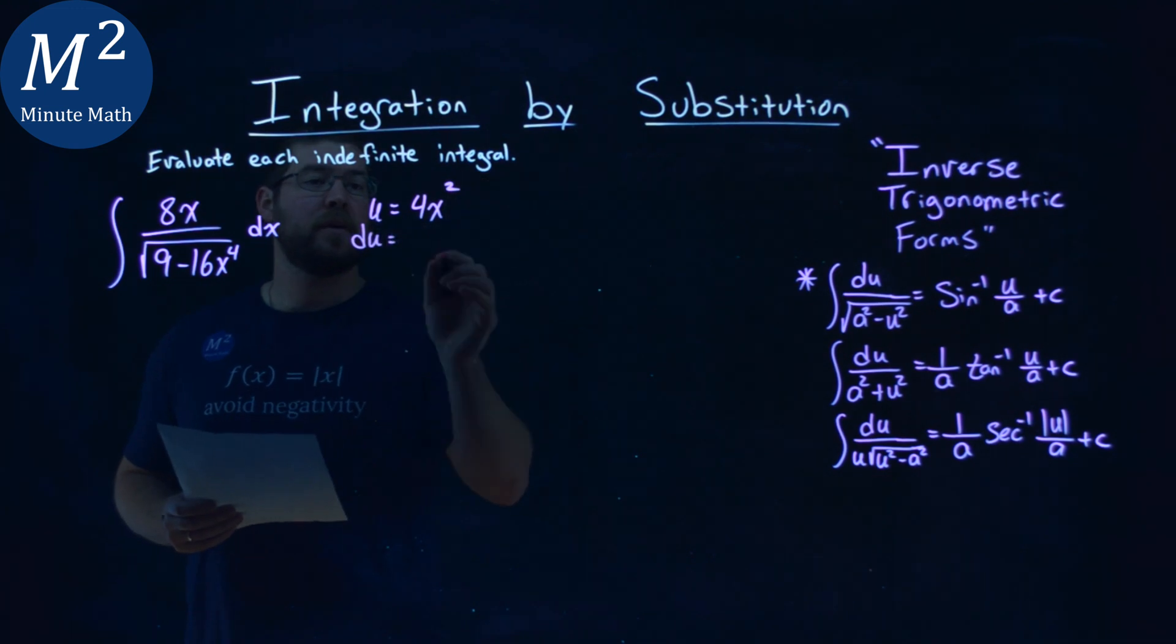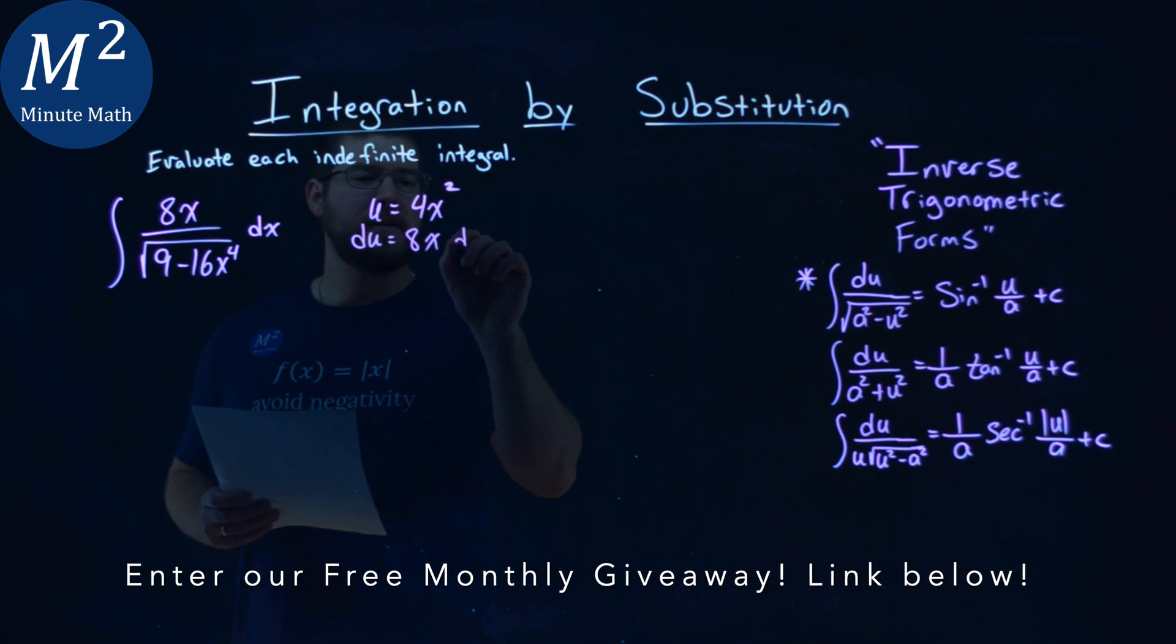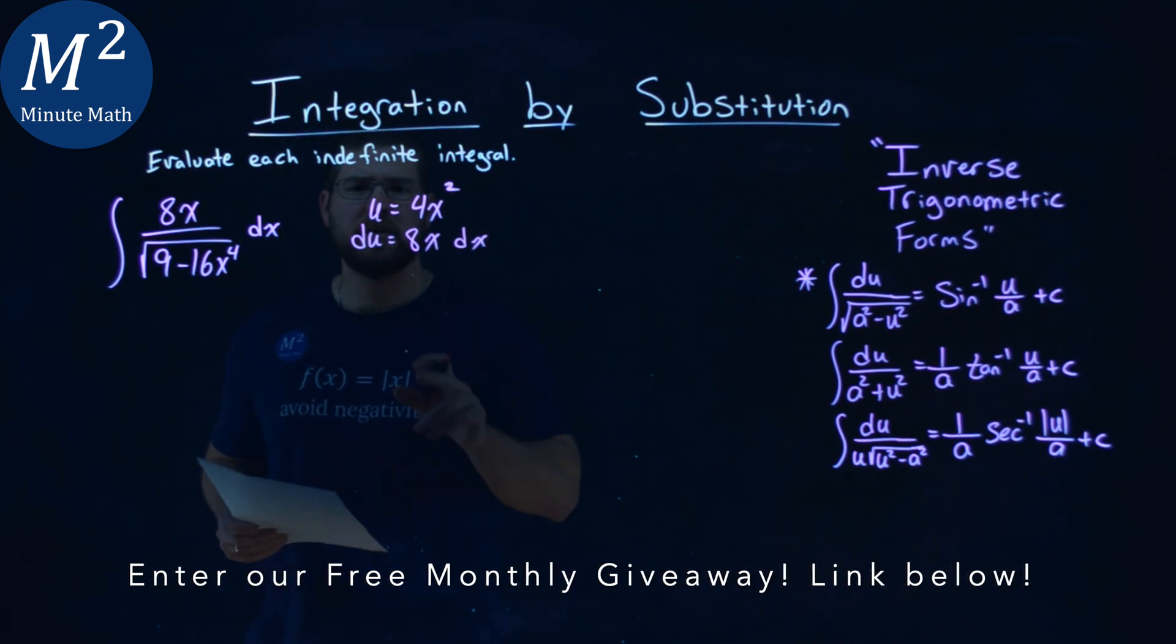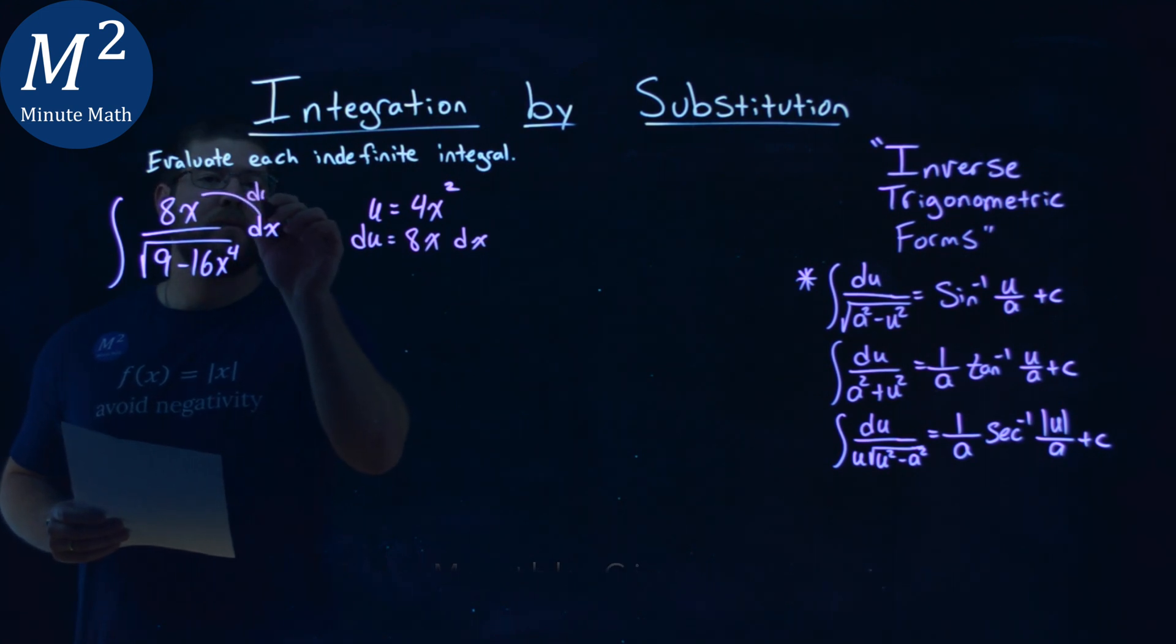Now I need to find my du value, the derivative here. 2 comes down, times 4 is 8x to the 1st power, dx. And that actually works out pretty well. Notice that 8x dx right here is that du. Perfect.